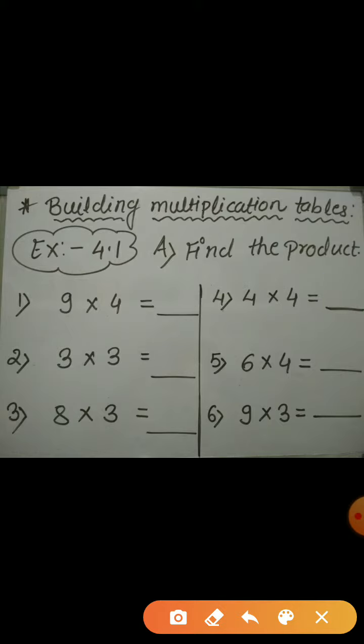Fifth example: find the product of 6 and 4. 6 ones are 6, 6 twos are 12, 6 threes are 18, and 6 fours are 24. So, the product is 24.